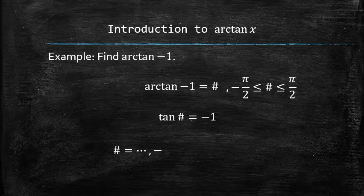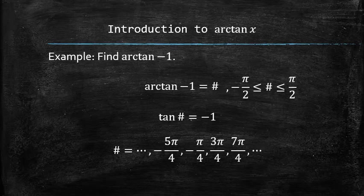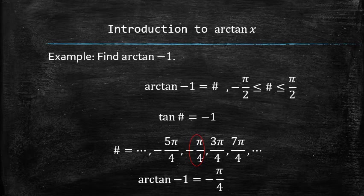There are infinitely many values for which tangent is equal to negative 1. However, only one of them is in the desired interval. Therefore, arctangent of negative 1 is -π/4.